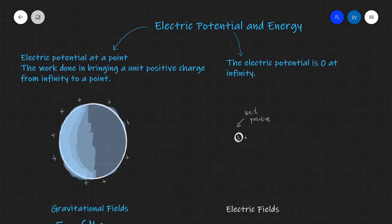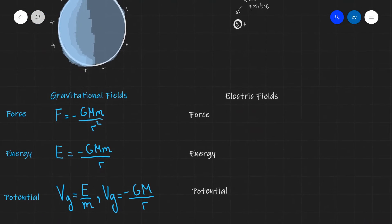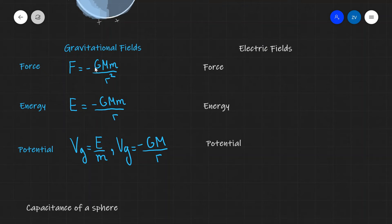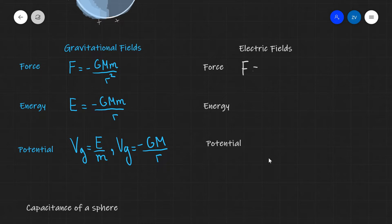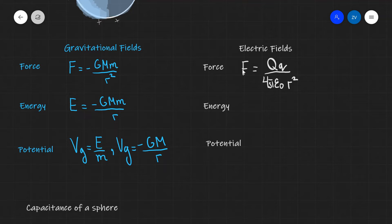Now let's have a look at some parallels between gravitational fields and electric fields — those two are incredibly similar. The force in gravitational fields is given by F = −GMm/R². In electric fields, the charge plays a very similar role to mass in gravitational fields. We're already familiar with the equation for force in electrostatics, so we can write that the force equals the product of the two charges QQ divided by 4πε₀ and then R². Those two equations are incredibly similar.